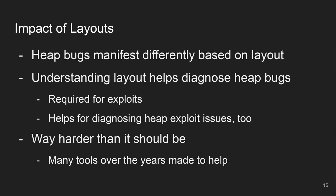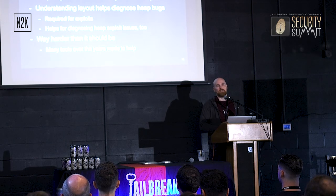The upshot for heap layouts: heap bugs, as I talked about, being separated in time and space - depending on what happens after an out-of-bounds read, write, or use-after-free, what happens downstream affects how it's going to manifest, and that manifestation is mostly determined by the layout. So if you're trying to write an exploit, you need to understand the layout. If you're trying to diagnose a heap exploit because you got a random crash that happens 1% of the time, understanding the layout can help you rewind back to the root cause. A lot of tools have been written over the years to help, and the stuff I'm writing is really inspired by them.